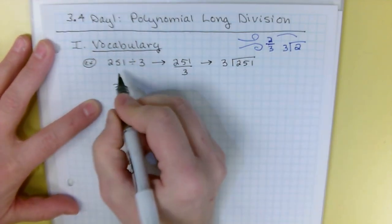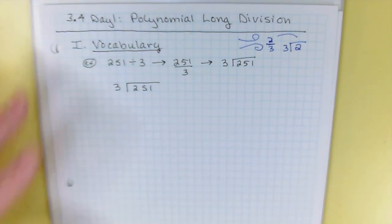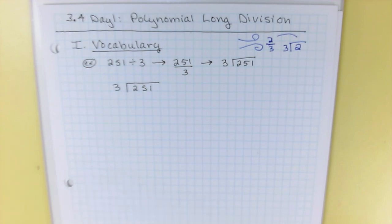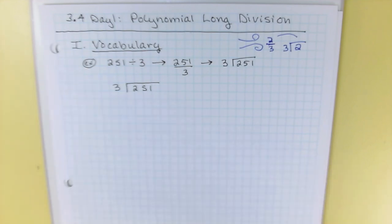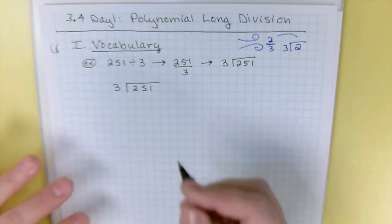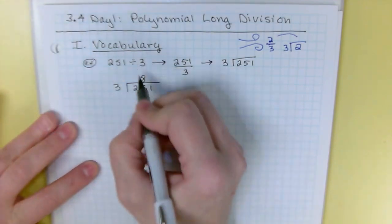We're actually going to do long division to remind you of the process. So we're going to take 251 and divide a 3 out of it. Typically how you learned it was: what times 3 is a number close to 25 but not bigger than 25? You'd think 3 times 7 is 21, 3 times 8 is 24 — that's about as close as I'm going to get. So the 8 goes over the 5. Then you multiply 8 times 3 and you get 24.